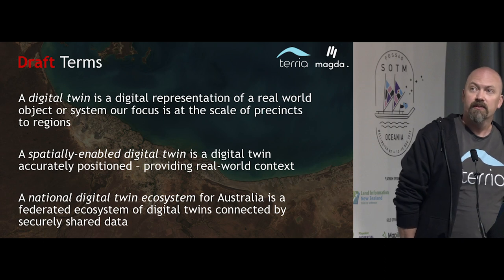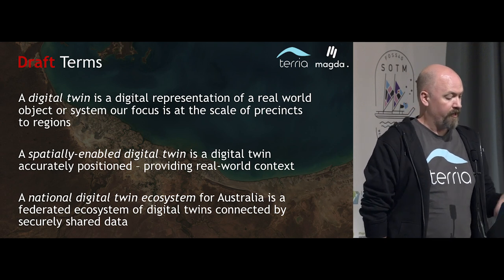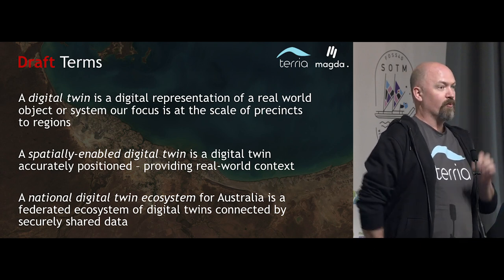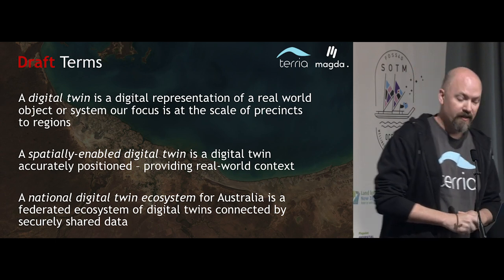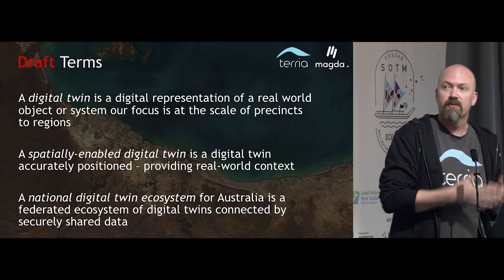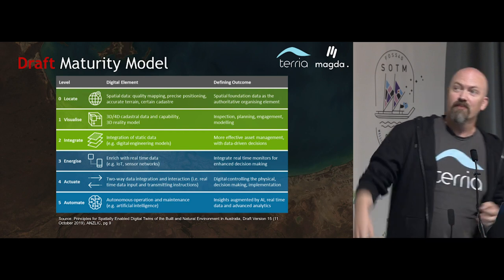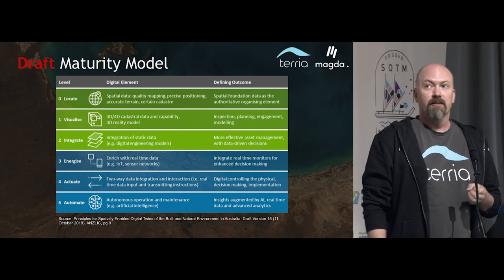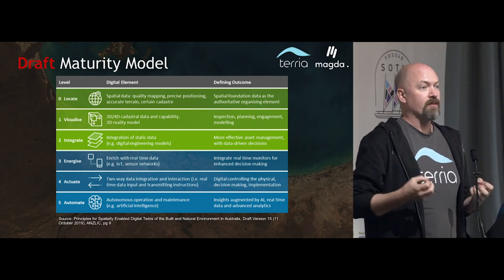ANZLIC and the people in the collaboration group have put together a number of draft terms. At the top we're talking about a digital representation on the scale of precincts to regions, then a spatially enabled digital twin — which starts to exclude other digital twins — and then the vision at the bottom is a national digital twin ecosystem where we have a bunch of different digital twins that all talk to each other. Along with that comes a maturity model. We're somewhere between two and three — we've got a bunch of data and we're trying to enrich it with real-time data. There's a lot of talk about a digital twin having to have a pulse, meaning we have to get the real-time state of the world into it.